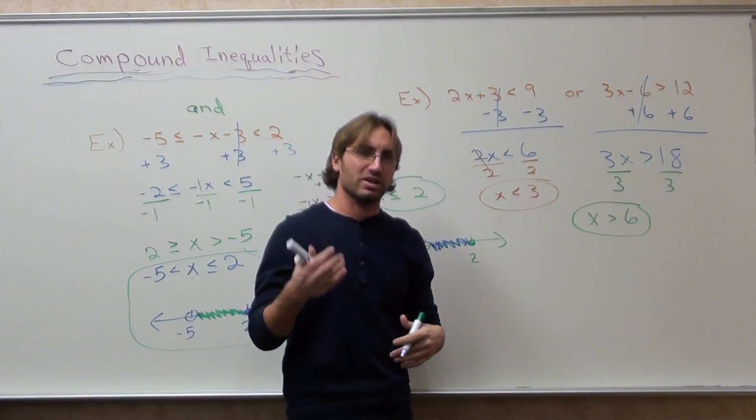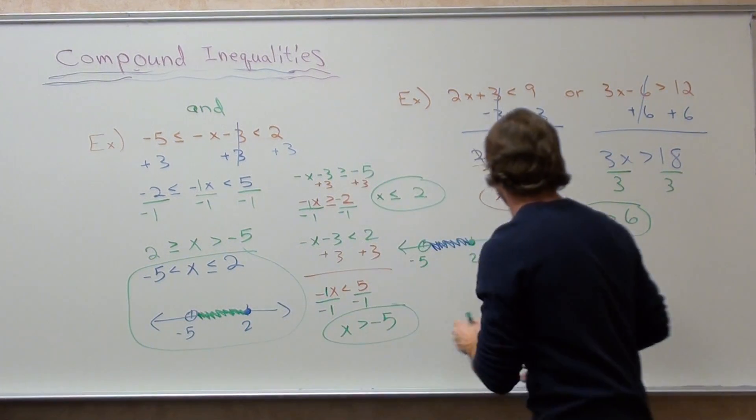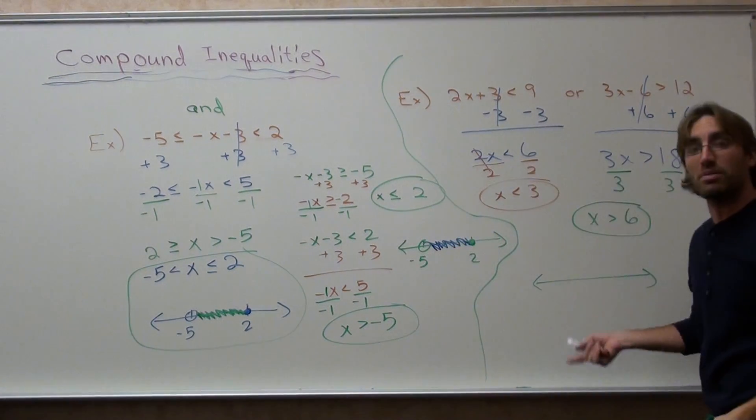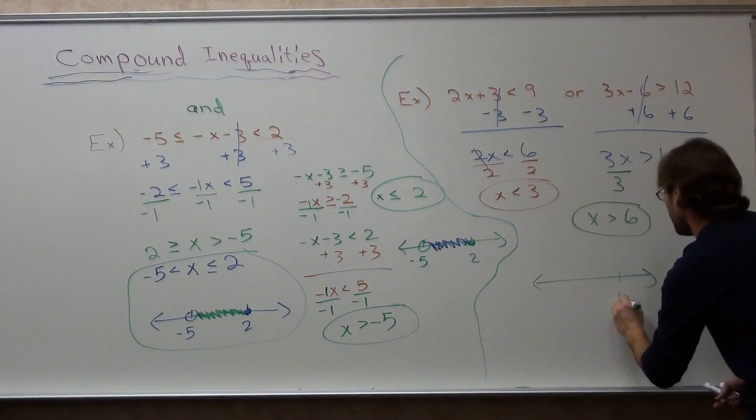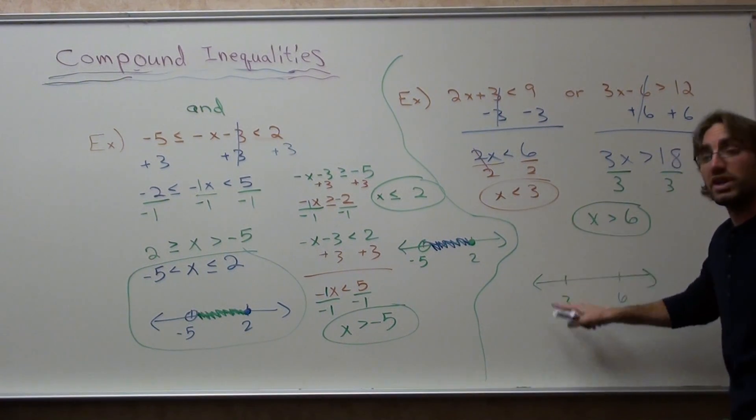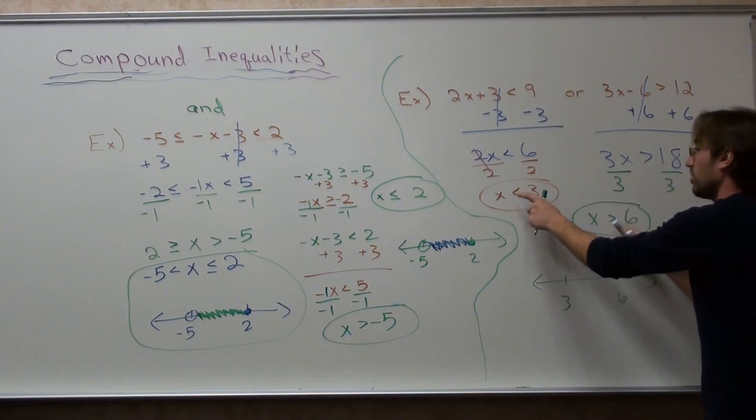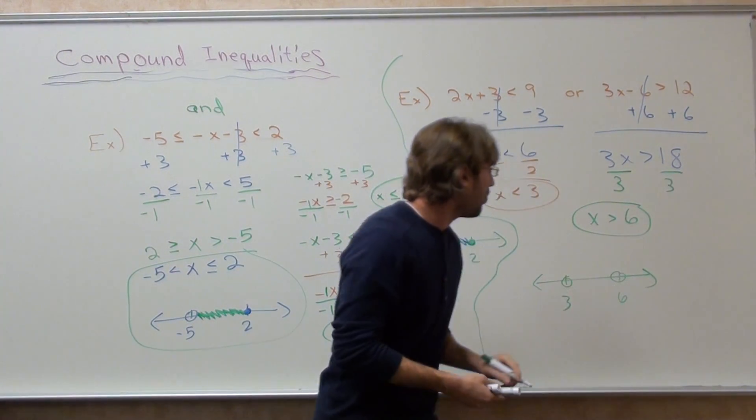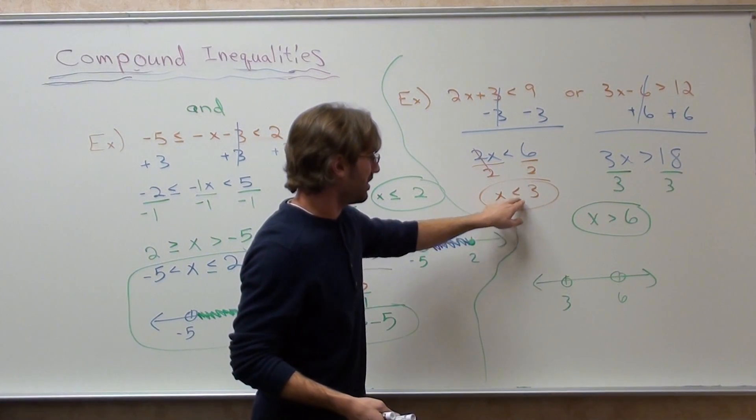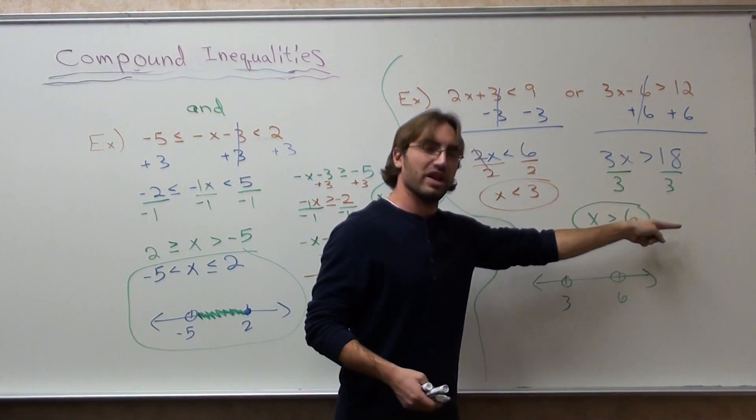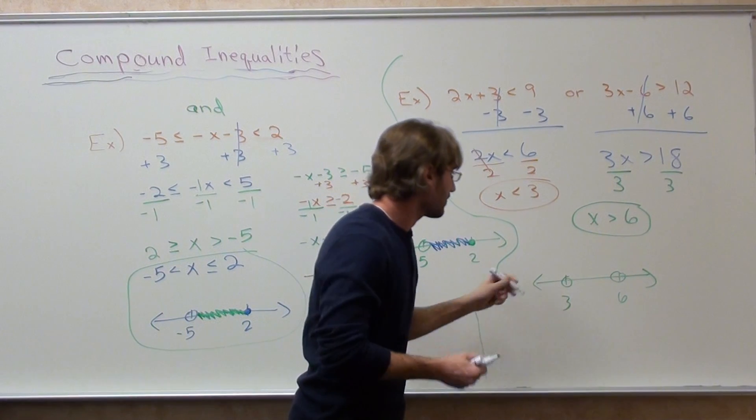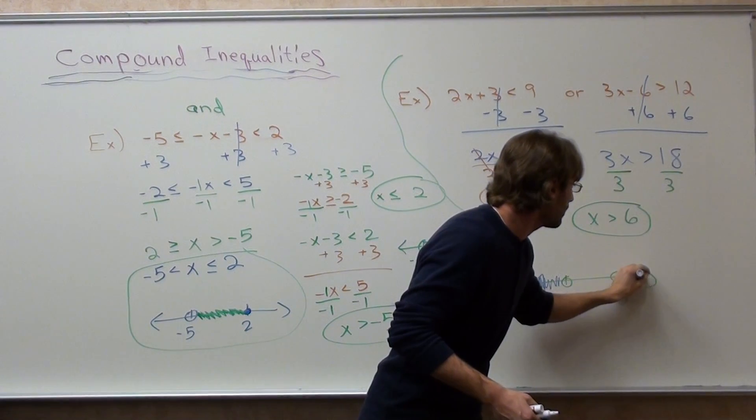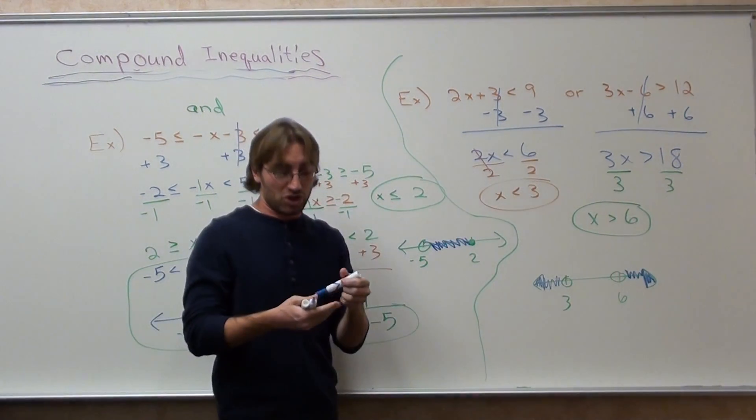Now, with an or problem, it's a little bit different. Here's your number line. Here's 3. Here's 6. They're both open circles, because there's no line underneath the inequalities. But with an or problem, this one's going to be less than, the arrow's pointing that way, and this one's going to be greater than, the arrow's going to point the other way. And you're going to get something like that. And that's exactly what you're supposed to get.